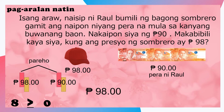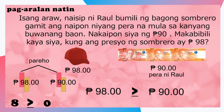Kung ganoon, ibig sabihin, ang siyam napot walong piso ay mas malaki kaysa sa siyam napong piso. At isinusulat natin ito sa ganitong simbolo. Sapat ba ang pera ni Raul? Makakabili ba siya ng gusto niyang sumbrero? Hindi, dahil kulang ang kanyang pera.